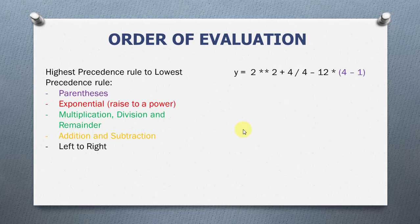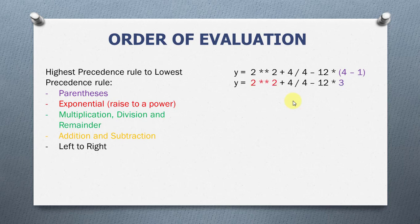Let's see another example. Now we have our numeric expression to be 2 raised to the power 2 plus 4 divided by 4 minus 12 times in bracket 4 minus 1. In this example, we have parentheses and the parentheses has the highest precedence. So Python will evaluate what's in the parentheses first. So, 4 minus 1 is 3.